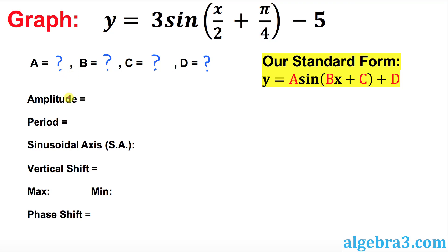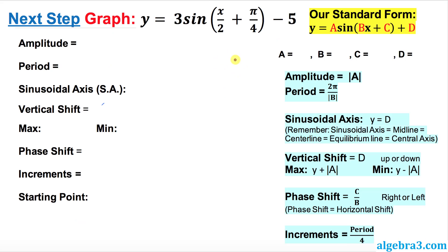With the help of those parameters, we will find out amplitude, period, sinusoidal axis, vertical shift, and phase shift. Comparing our given function with the standard form tells us that a equals 3, b equals 1 over 2 (since x over 2 is the same as 1 over 2 times x), c equals pi over 4, and d is negative 5.